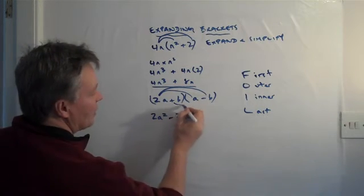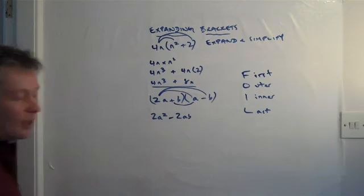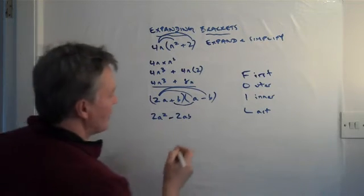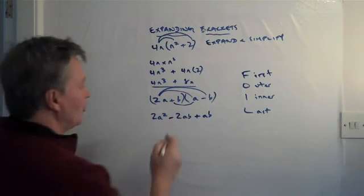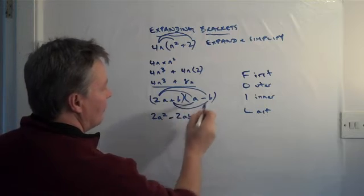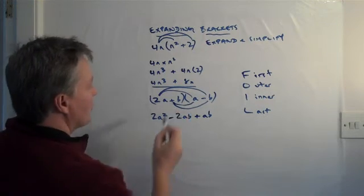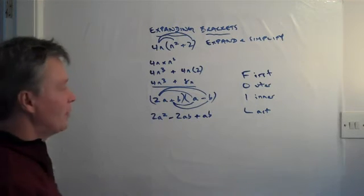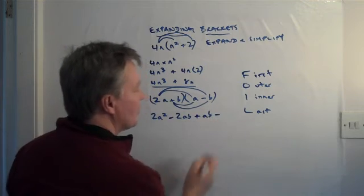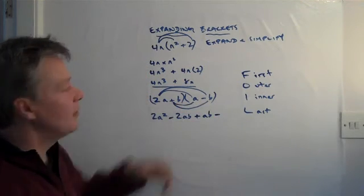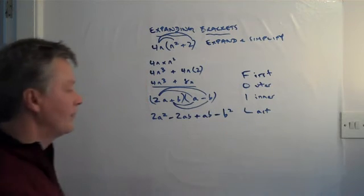Then the next bit we multiply is this one, which is plus b multiplied by a. So that is plus ab. And then the final bit that we multiply is that term, which is plus b multiplied by minus b. Now, plus multiplied by a minus is a minus, and we've got b multiplied by b, which is b squared.